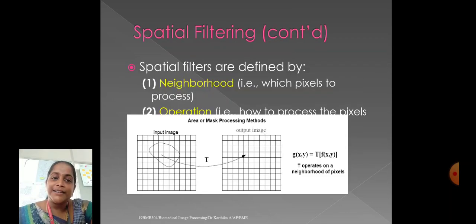In Spatial Filtering, we can have two main processes. First one is neighborhood, second one is operation. Neighborhood, which pixel to process. Operation, it is about how to process the pixels.